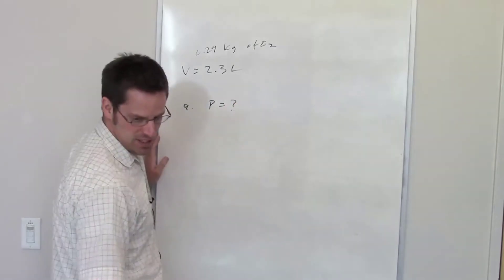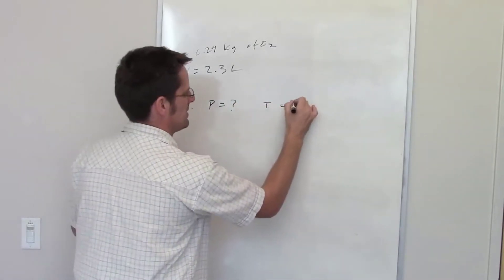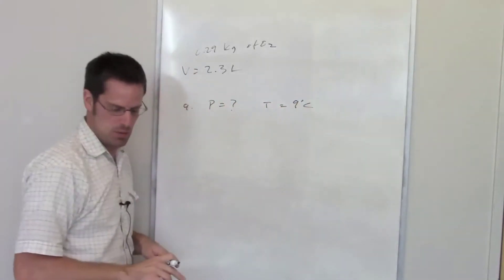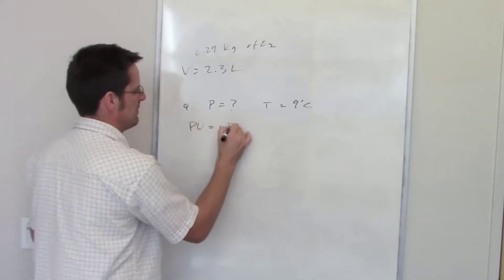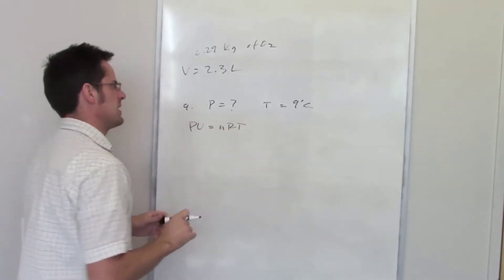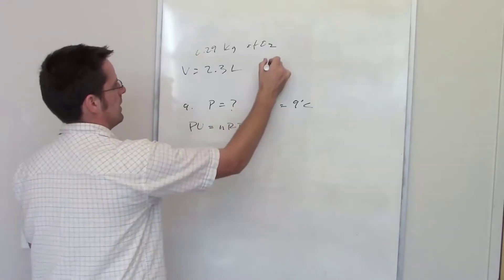It asks us for pressure if the temperature is equal to 9 degrees Celsius. Let's begin by tackling that one. We're once again going to use our ideal gas equation P equals nRT over V. Of course I know my ideal gas constant.